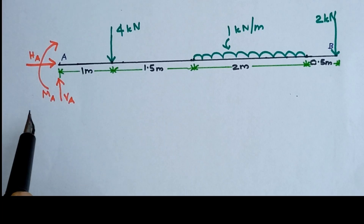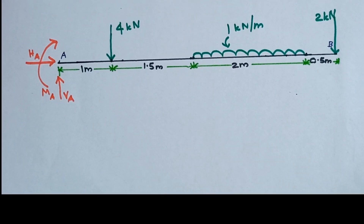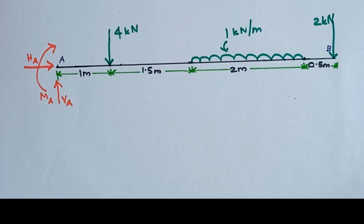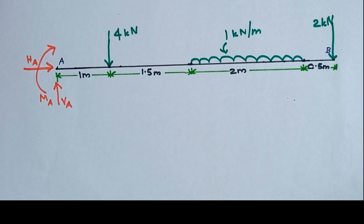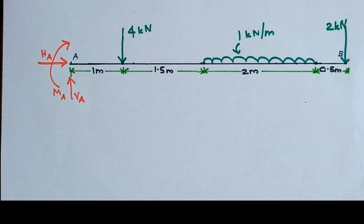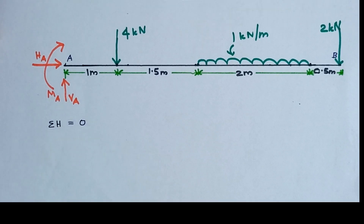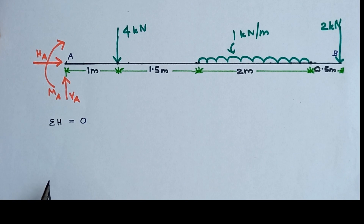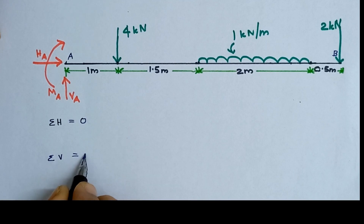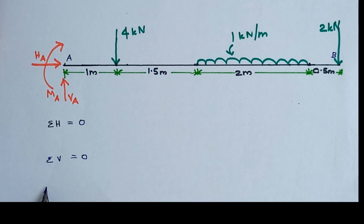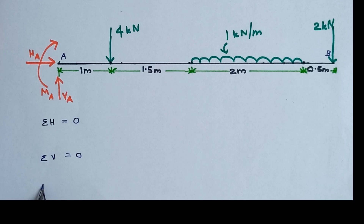Here we have 3 unknown reactions. For any further calculation we require the values of these unknowns. We have 3 equilibrium conditions that can be applied to get the values of these 3. The first is: algebraic sum of horizontal forces equals zero, sigma H = 0. The second is: algebraic sum of vertical forces equals zero, sigma V = 0. And the moment acting on any point of the beam will be equal to 0. Let us consider point A, so MA = 0.